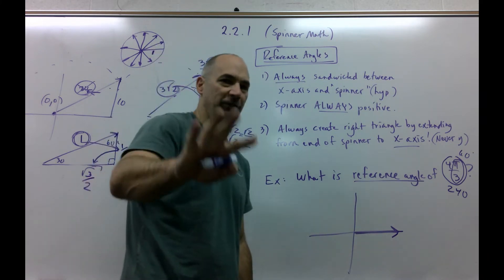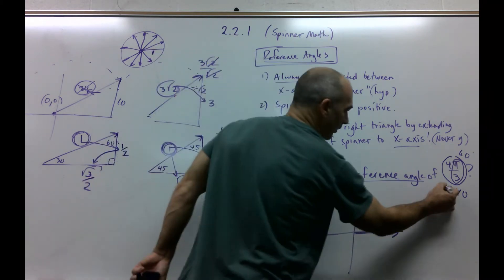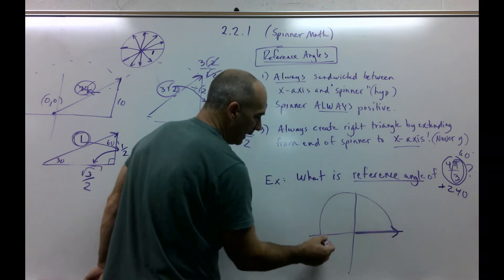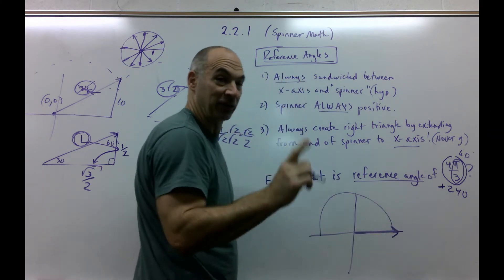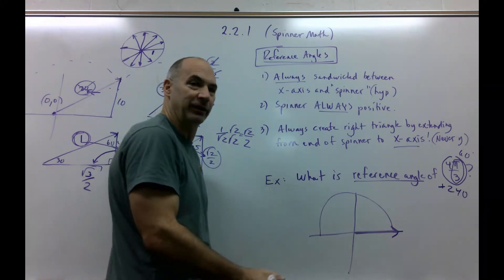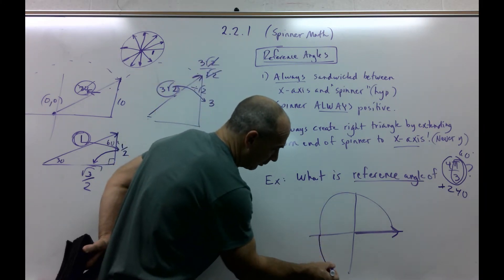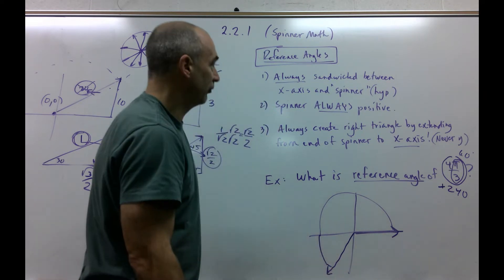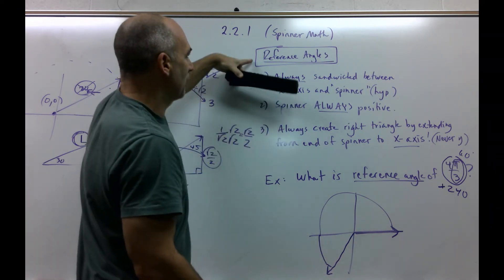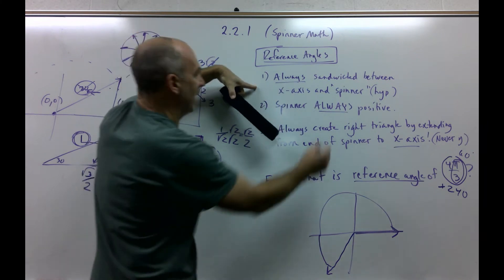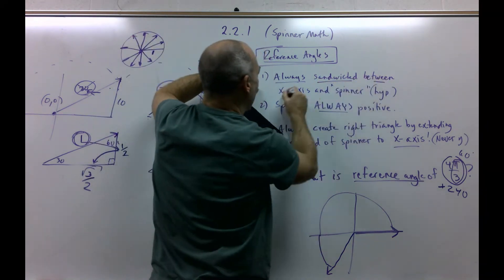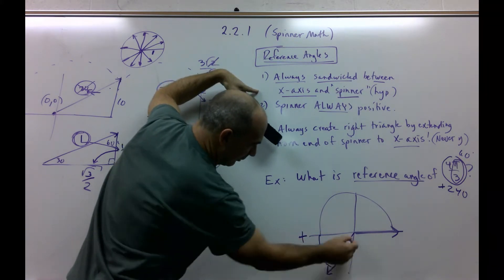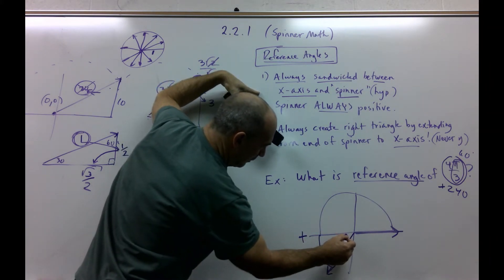And because there's an implied positive, that means up. So there's 180. Now you've got to be somewhat perfectionistic here for your brain to connect to this material. I need to go 60 degrees past that, which is right about there. So where's my reference angle? Well, it's always sandwiched between the x-axis and the spinner. Well, here's my x-axis and here's my spinner.